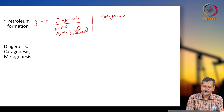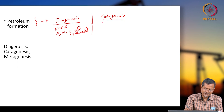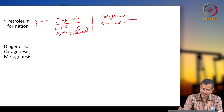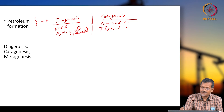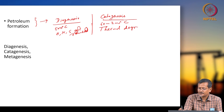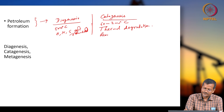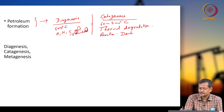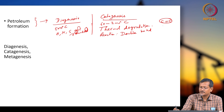A certain amount of hydrogen will still be there, but the total amount will be reduced. In catagenesis, at 60 to 200 degrees centigrade temperature, transformation or change will occur. Thermal degradation will be occurring, and double bonds — like carbon double bonds — will be reduced.